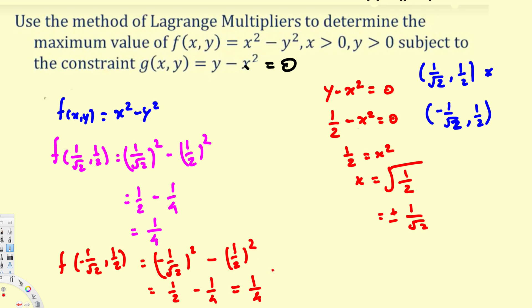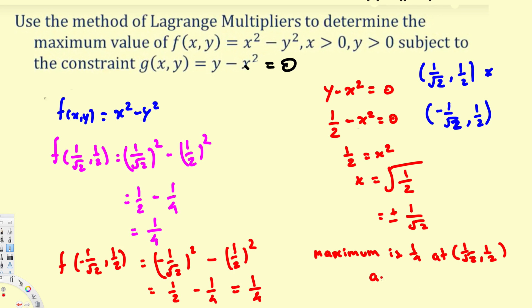Since both points give the same value, the maximum occurs at two places. The maximum is 1/4, occurring at both (1/√2, 1/2) and (−1/√2, 1/2). That is the final answer.